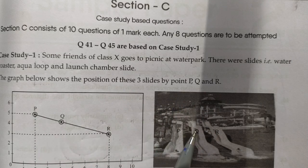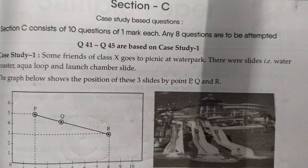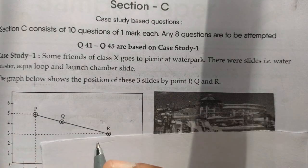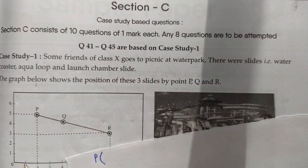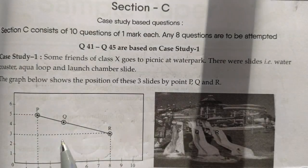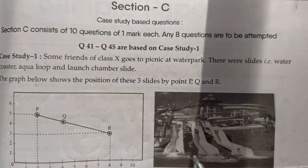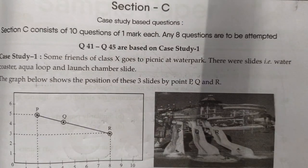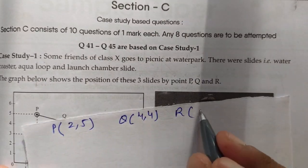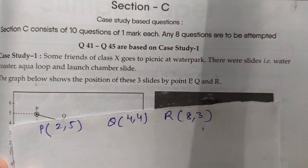Whenever a question comes, you should quickly write down the coordinates of all the points because they will be needed. So here, the coordinates of P are (2, 5), the coordinates of Q are (4, 4), and the coordinates of R are (8, 3). Write all the points' coordinates first.